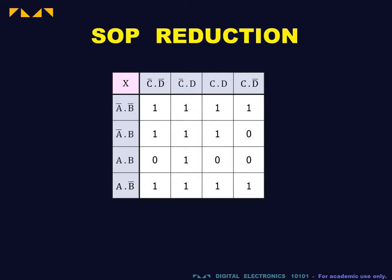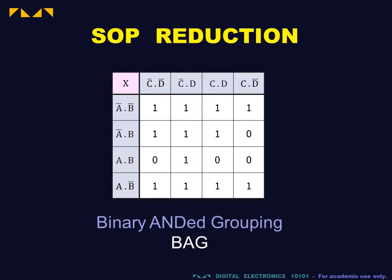As discussed in previous videos, each product term of the expression is represented on the map by a 1, 2, 4, or 8-cell bag.